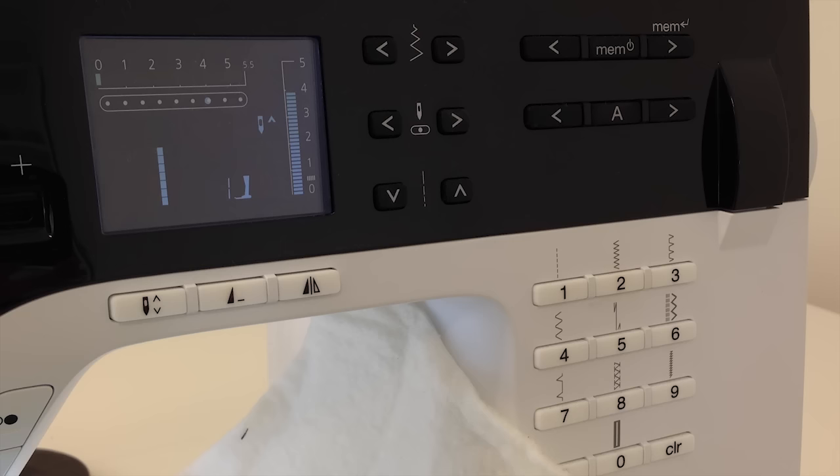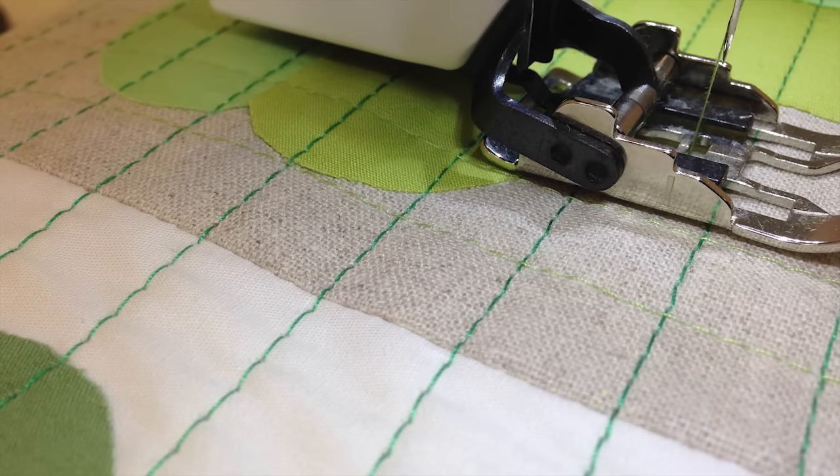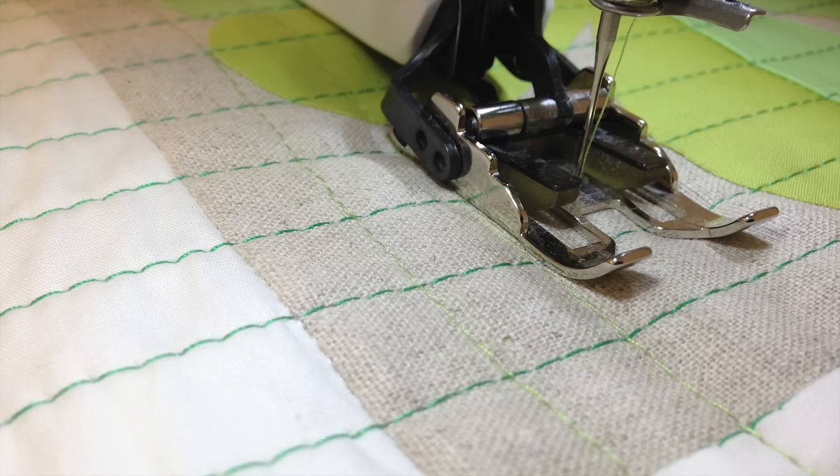Set stitch length to 4 and move needle two positions to the right of center. Moving the needle position to the right will increase the spacing between the grid stitching lines. We will be grid quilting our table topper, which will consist of horizontal and vertical lines which creates a grid-like pattern. I used emerald green for one set of lines and light fern for the other set of lines.